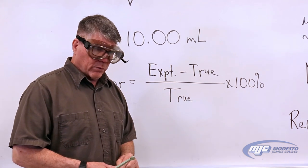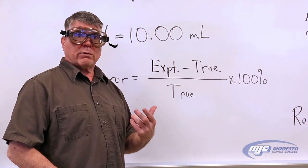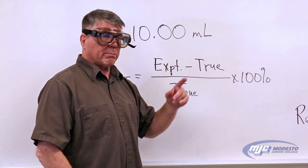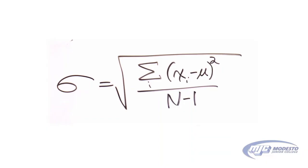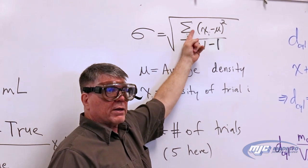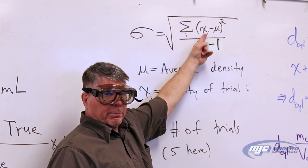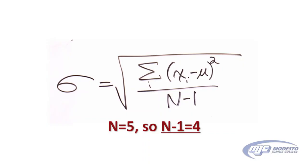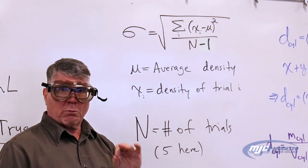The other thing you're going to do with your numbers is find how precise you were with your measurements. That is measured by the standard deviation, which is that equation right up here. The sigma stands for standard deviation, and the formula is the square root of the sum of the difference between each value and the average value, squared, added up, divided by the number of measurements, which for you will be 5. That gives you the standard deviation — the smaller that is, the more precise you were.